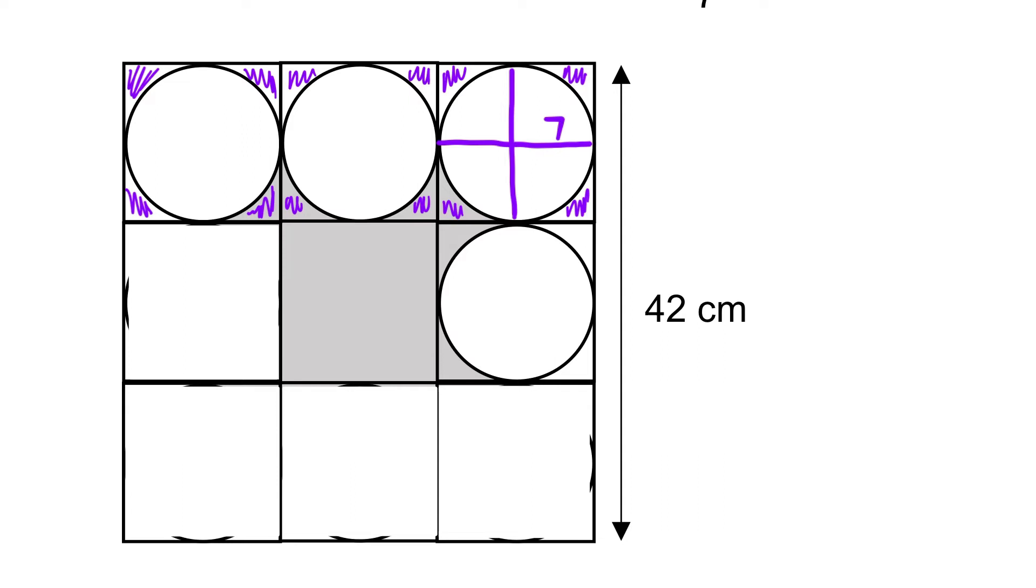Now, how do we find the shaded part? We just need to take the entire square, 42 times 42, the entire area of the square. We subtract one, two, three, four, five small squares and one, two, three circles. Then we are just left with the shaded part.